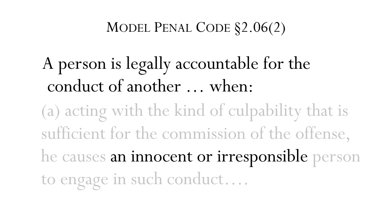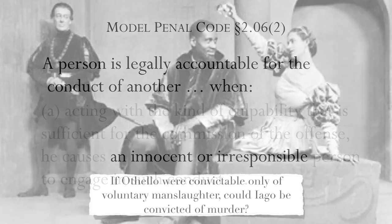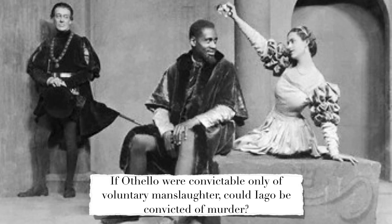Consider Shakespeare's Othello. Iago convinces Othello that Othello's wife, Desdemona, has been unfaithful. Iago's purpose is to drive Othello into a murderous rage. Othello, let's say, gets voluntary manslaughter. Murder for Iago? Not settled.